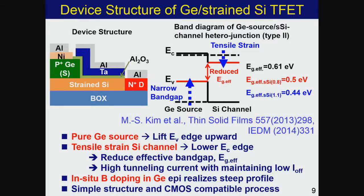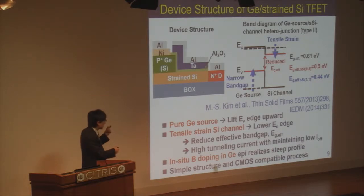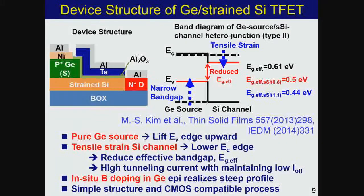By using a germanium source, the valence band is raised. By using tensile strain in the channel, the conduction band edge is lowered. Therefore, the effective band gap for tunneling is reduced — a lower effective band gap is obtained by combining the two materials. In this case, germanium is grown by MBE on strained silicon. The strain provides better quality germanium because it reduces the lattice mismatch between germanium and silicon. In-situ boron doping is used to introduce P+ impurities into the germanium.